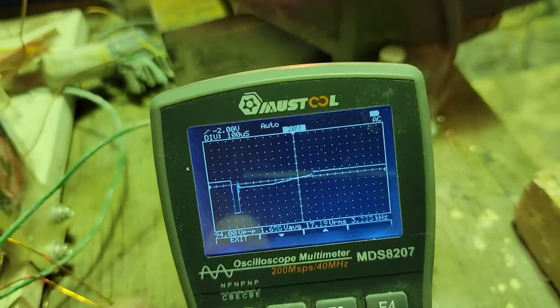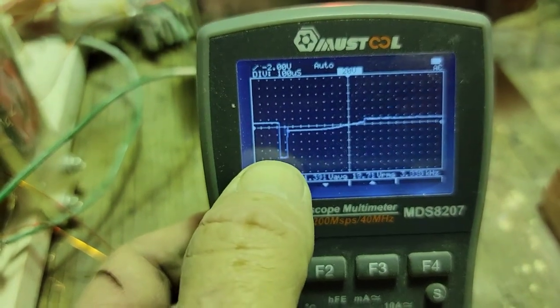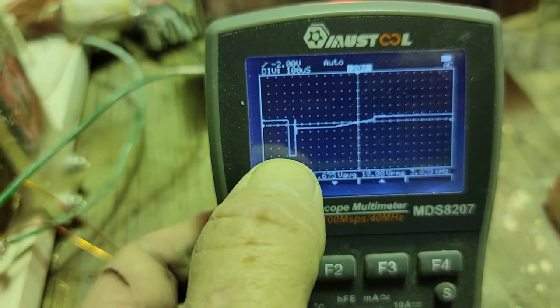That's 20 volt divisions. This one is 20, 40, 60, 80.